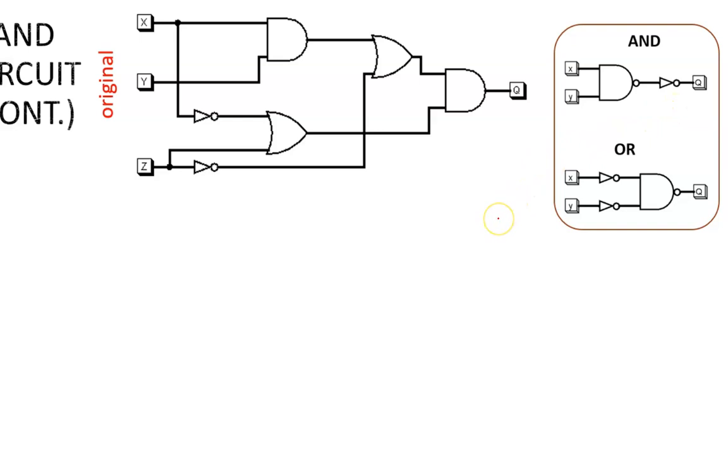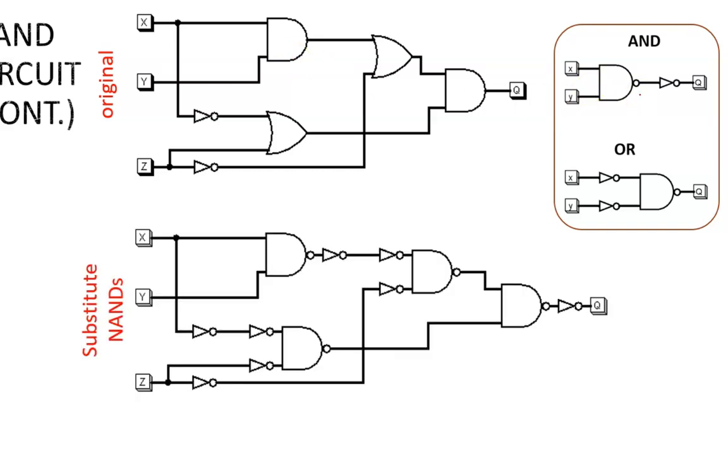So, looking at this original circuit, we see an AND gate. This needs to be replaced by this setup: a NAND followed by a NOT. Thus, these new gates in the next circuit.